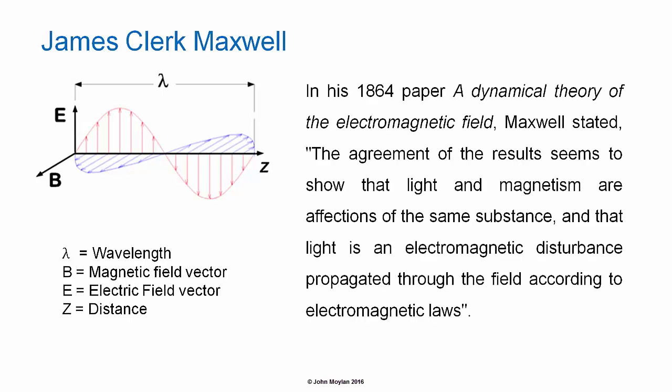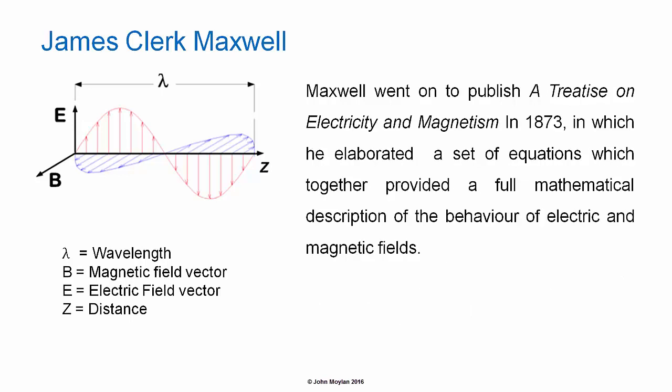In his 1864 paper, A Dynamical Theory of the Electromagnetic Field, Maxwell stated that, The agreement of the results seems to show that light and magnetism are affectations of the same substance, and that light is an electromagnetic disturbance propagated through the field according to electromagnetic laws.